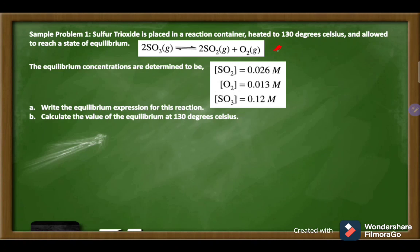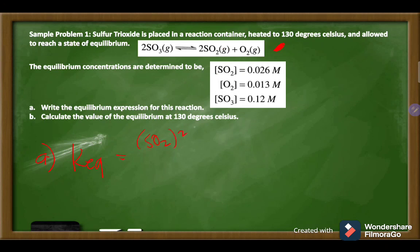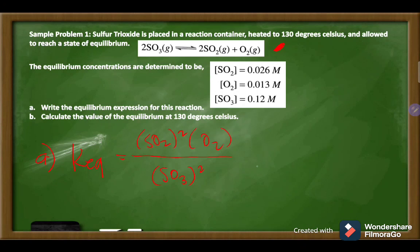Based on our general steps, since we already have the balanced chemical equation, we can proceed to letter A. For letter A, we write the equilibrium expression: KEQ equals the concentration of the products — SO2 and O2 — over the concentration of the reactant SO3. The coefficients of each substance become their exponents. This is our equilibrium expression for this problem.